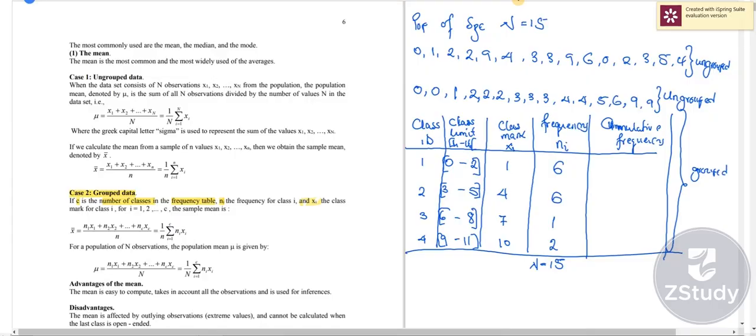The reason why we want to group information is that imagine our population size was 150 and you are asked to find the population mean. It would mean 150 points that you keep on adding divided by 150.